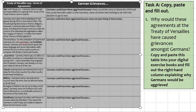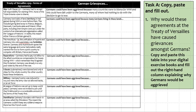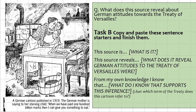Task B is looking at a source and we're trying to draw an inference from this particular image. This image is of a mother and a child, although that child seems to be the image of Germany — the German mother saying we won't be able to eat unless we pay a certain amount of money. And if you've read through task A properly, you'll understand what that refers to.